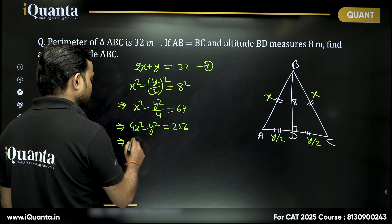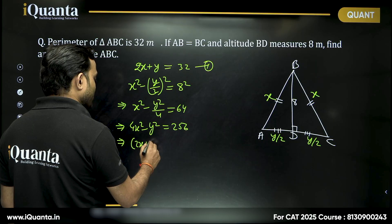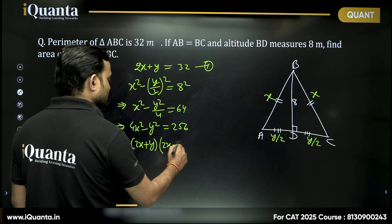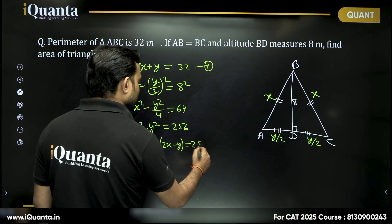Now, this can be written as 2X whole square minus Y square. So, 2X plus Y, 2X minus Y is equal to 256.